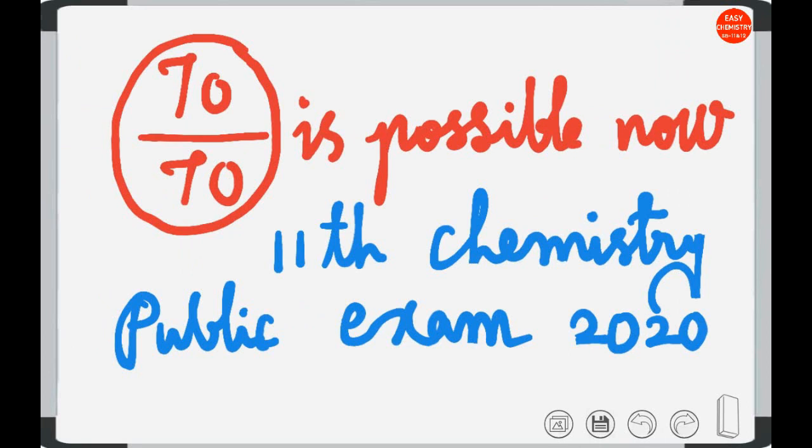If you know how to follow line by line textbook approach, you can score 70 out of 70 very easily. It is possible now. For biology students, computer science students, all students can benefit from this approach. Definitely you will score 70 out of 70 if you follow this plan.